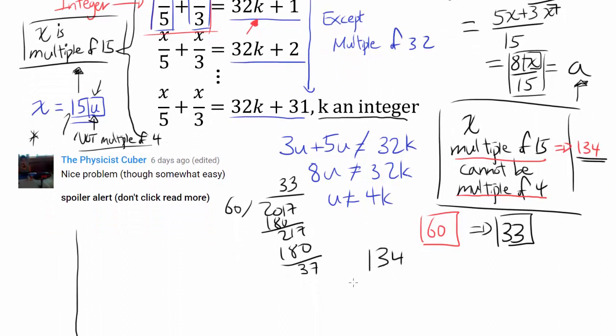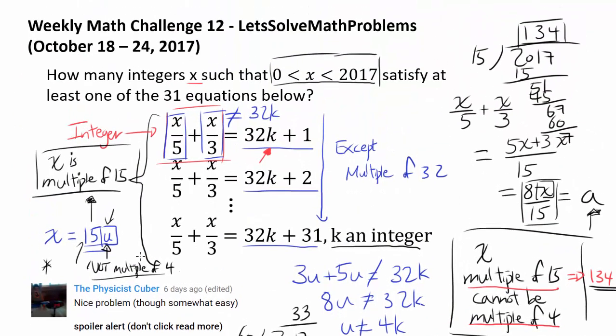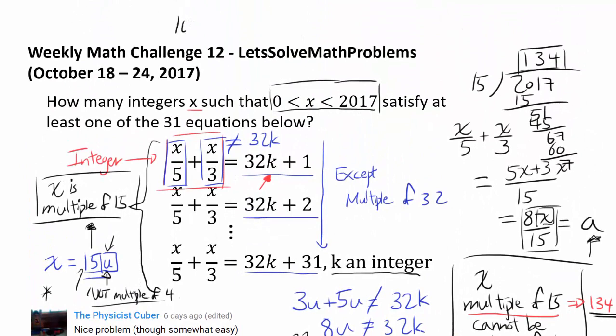So the final answer is 134 minus 33, which is 101 as the physicist Cuber told us. So the answer to this weekly math challenge number 12 is 101.